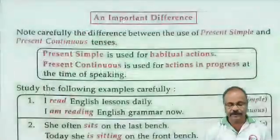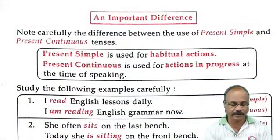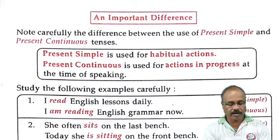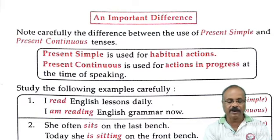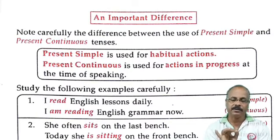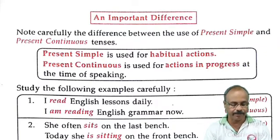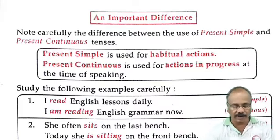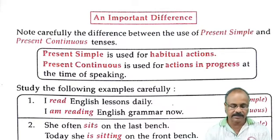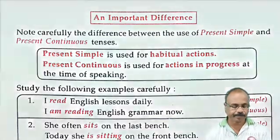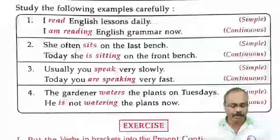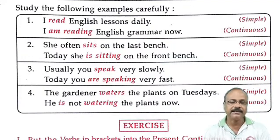An important difference — note and listen carefully. The difference between the use of Present Simple and Present Continuous Tense. Present Simple is used for habitual action. For example: 'I read English lessons daily' — simple.